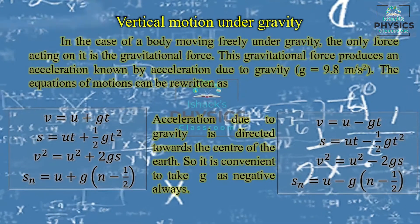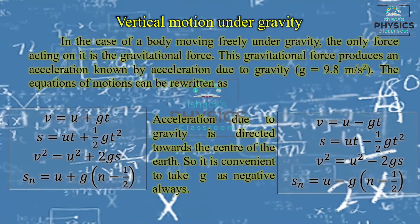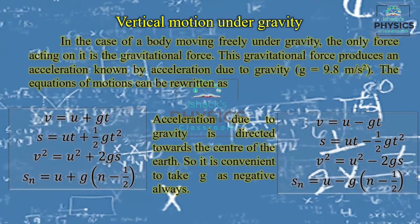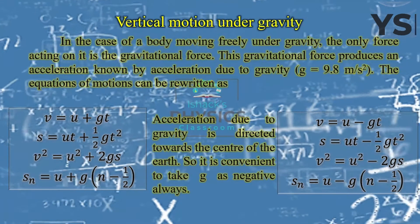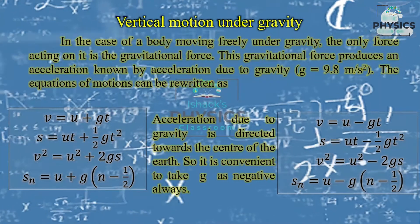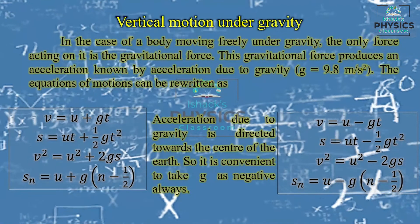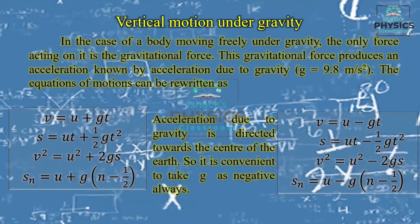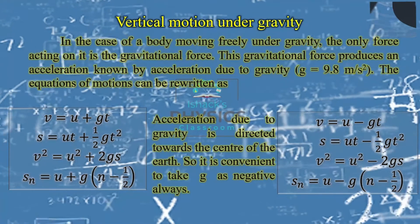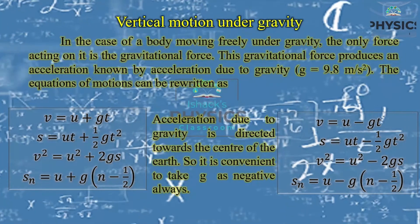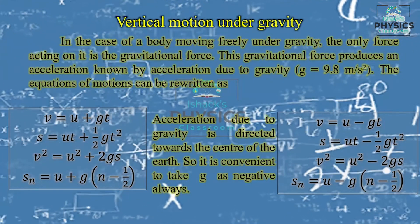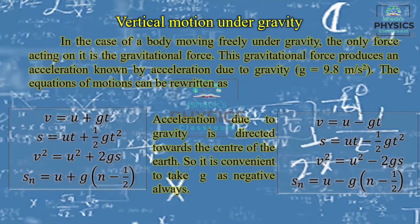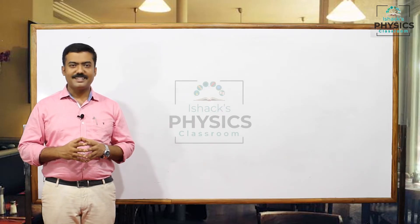The fourth equation is for a special type of problem: finding displacement in the nth second. For example, if an object is dropped and covers 10 meters in its last second, find the height. You can apply: Sₙ = u + a(n - ½). I hope the equations of motion are clear. If you have any doubts, feel free to ask through comments. Thank you for watching.